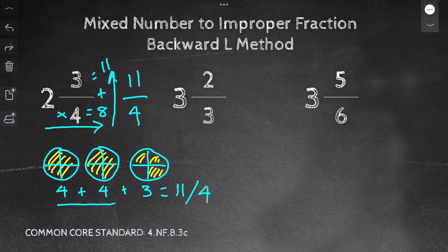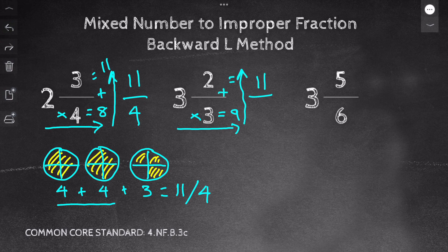Let's go to 3 and 2/3. So I multiply across: 3 times 3 equals 9. Then 9 plus 2 equals 11. And I keep my denominator of 3. So I have 11/3.